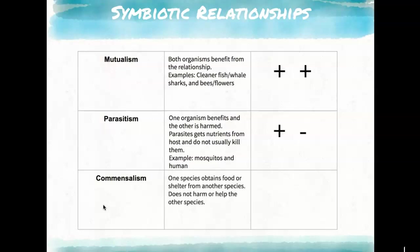Commensalism is when one organism gains food or shelter from another species, getting something positive, but the other organism is neither harmed nor helped — they're basically unaffected. A shark and remora fish is an example: remora hitch a free ride on the shark, which is unaware they're even there. Similarly, birds sitting on buffaloes get a rest and can catch insects kicked up while walking, but the buffalo gets nothing from the relationship.